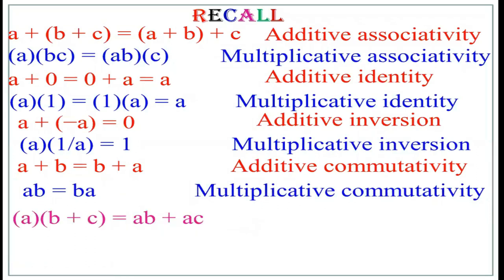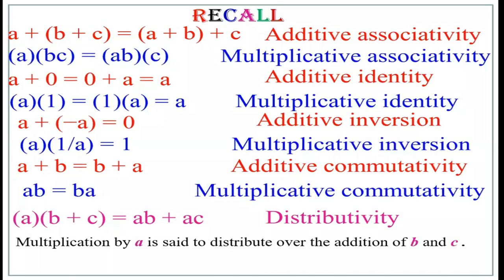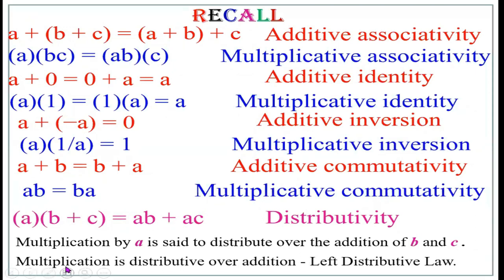What is this property? A into (B plus C) equals AB plus AC. This property is known as the distributive property. Here, multiplication by A is said to distribute over addition of B and C, so we say multiplication is distributive over addition.